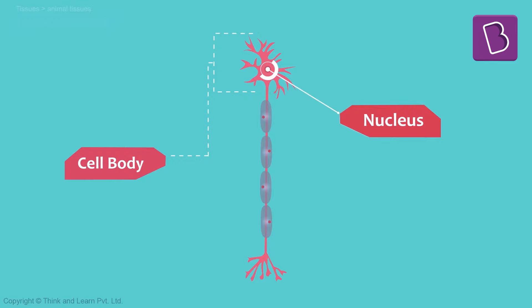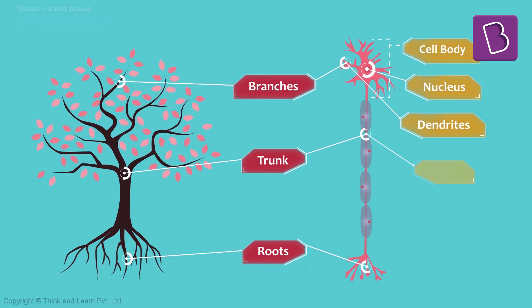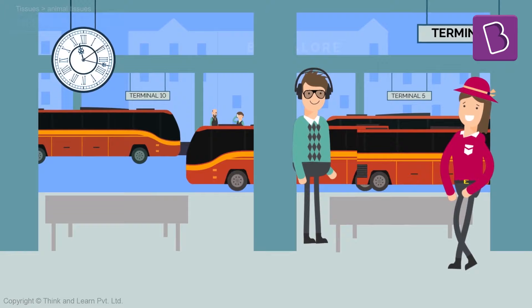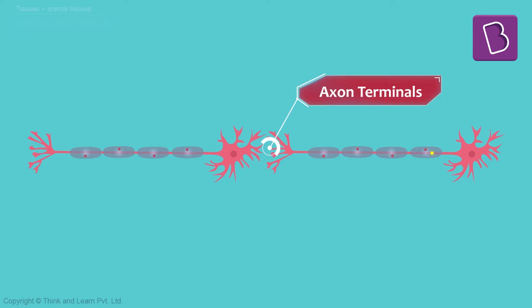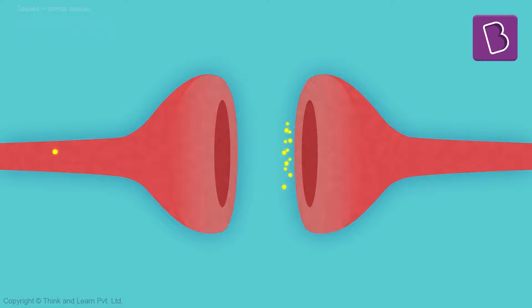Neurons look like typical cells with a cell body and a nucleus. This is an important diagram from an exam point of view. As you can see, it looks like a tree with branches, a trunk, and roots. The branches are the dendrites, the trunk is the axon, and the roots are called the axon terminals. Just like trains or buses come in and go out at a terminal, at the axon terminals, important information through electrical impulses is transferred from one neuron to the other — high jumping across through the small space called the synapse.